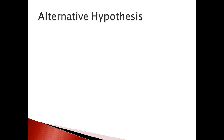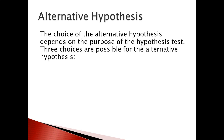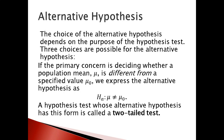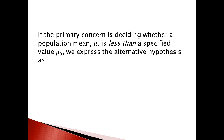For the alternative hypothesis, there are three different situations. The first one is if our primary concern is deciding whether a population mean is different from a specified value μ₀. If we are dealing with 'different,' we use the not-equals sign: Hₐ such that μ ≠ μ₀. This kind of hypothesis is called a two-tail test.